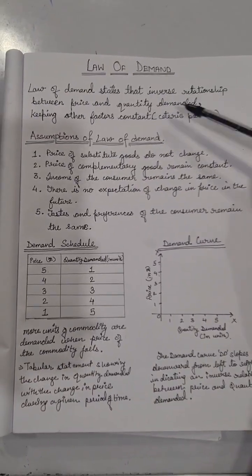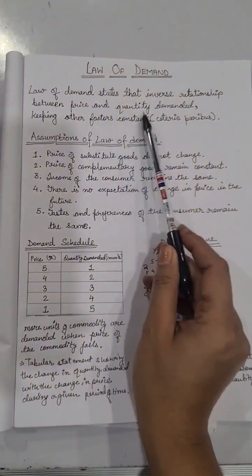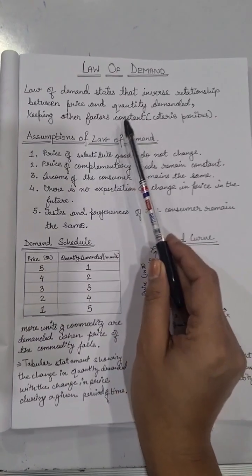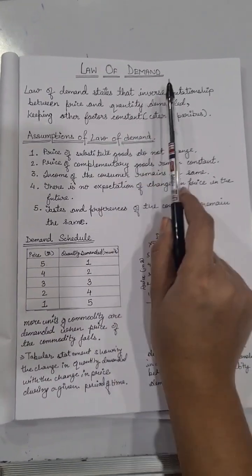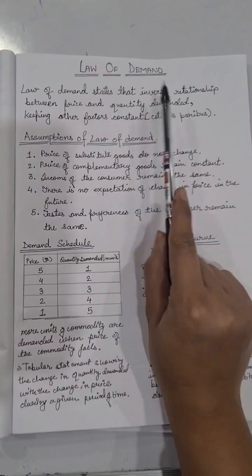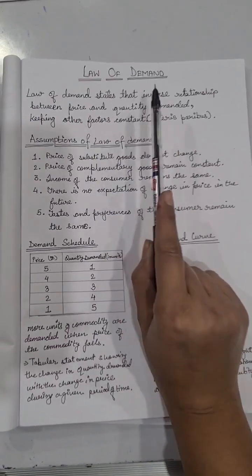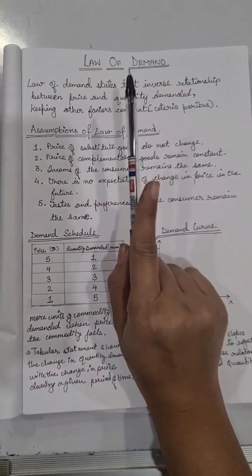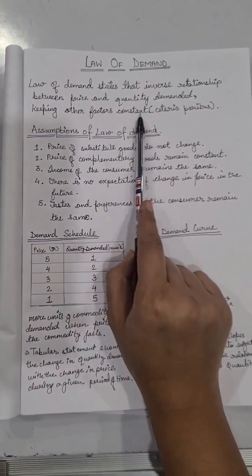The law of demand states that there is an inverse relationship between price and quantity demanded, keeping other factors constant. This means when the price goes high, the quantity demanded decreases, and when the price decreases, the quantity demanded increases when other factors are constant.